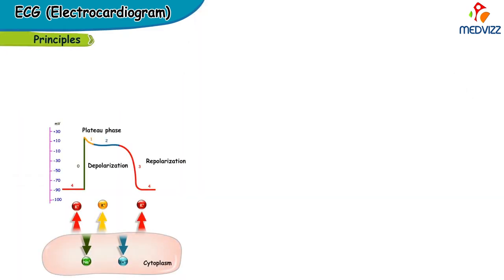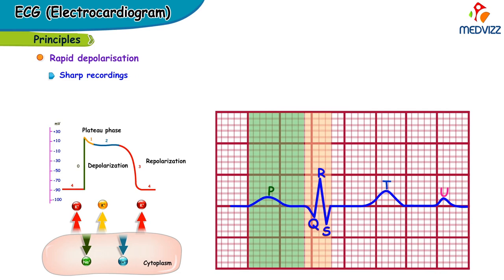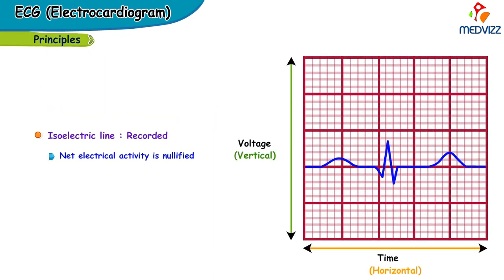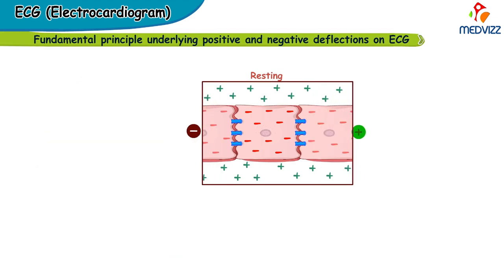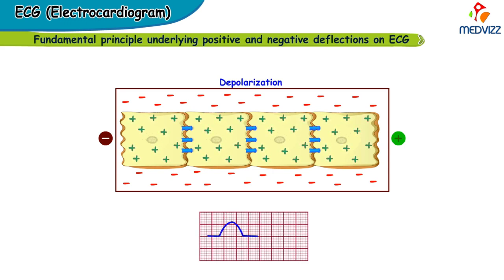There are certain principles as to how an ECG is recorded. Rapid depolarization results in sharp recordings, and a relatively slower depolarization results in smooth and blunt recordings. When the net electrical activity is nullified, an isoelectric line is recorded. Also, when the discharge is occurring through the AV node, an isoelectric line is again recorded. The fundamental principle underlying positive and negative deflections is that positive charges during depolarization moving towards a positive electrode results in a positive — upward — deflection, while negative charges during repolarization moving towards a positive electrode results in a negative deflection.